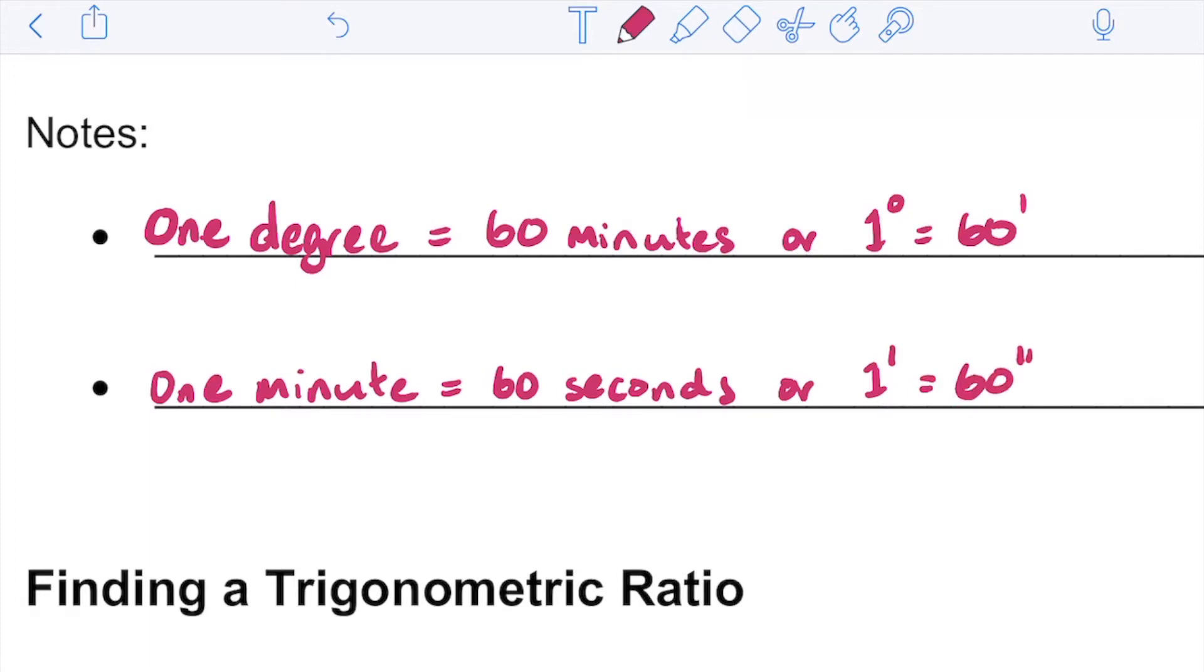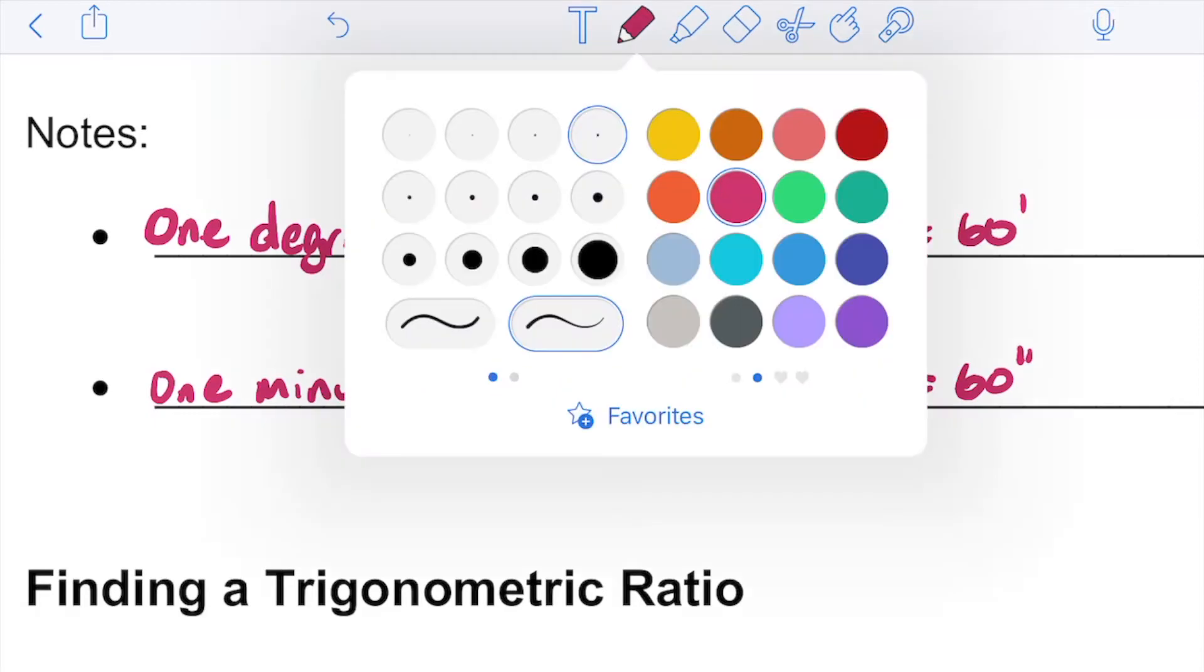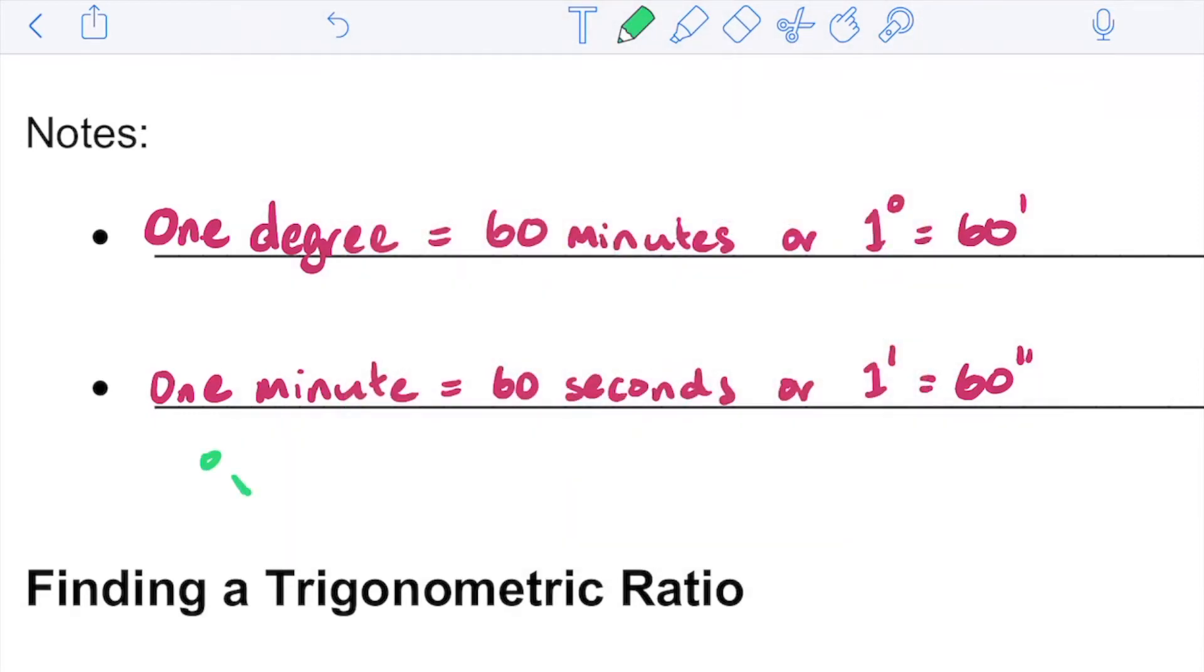These are our new symbols: we have the little circle for degree, we have the apostrophe for minutes, and we have the quotation mark for seconds.